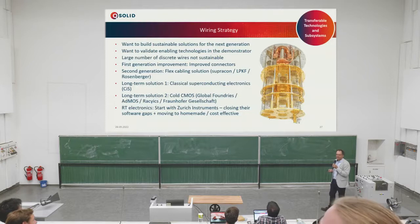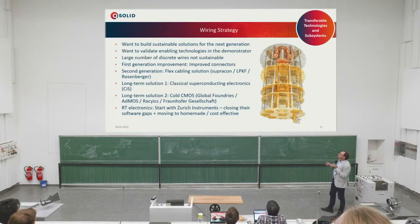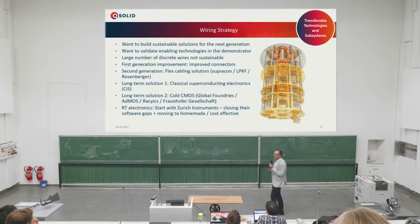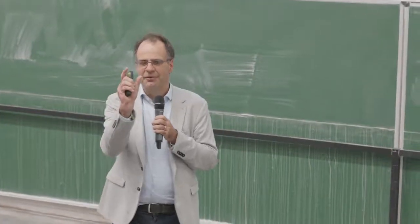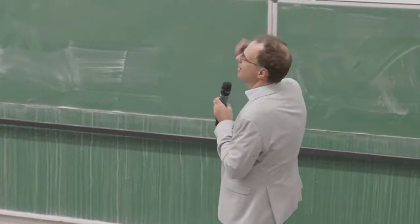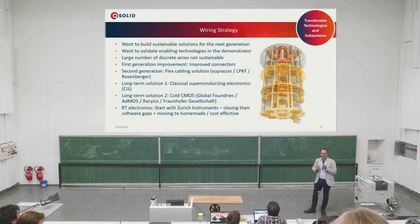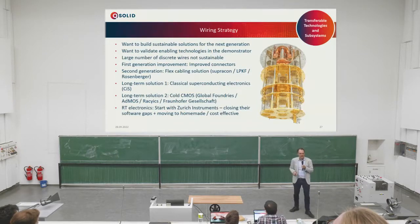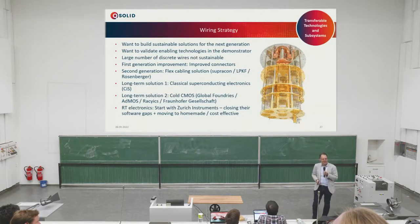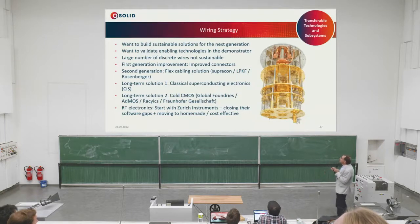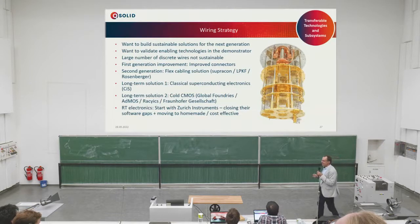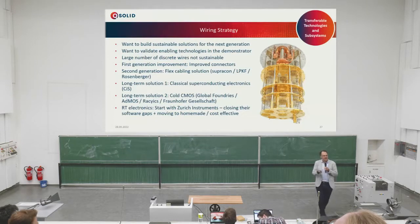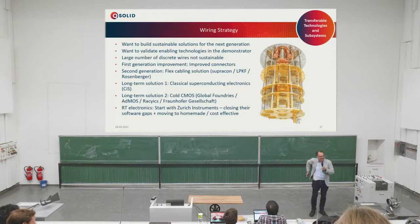We could probably manage with this technology up to 30 qubits, but we want to look at the future. We are starting with improved connectors, but then our partners at Supracon, LPKF, and Rosenberger are jointly developing a flex cable strategy — cables with multiple wires bundled into a very compact package, a connector at the bottom, making this much easier and more commercially viable. I have learned as a theorist that you want wires that work at the right frequency, at low temperatures, and that are non-magnetic — and if you try to order something like that, typically they are magnetic.